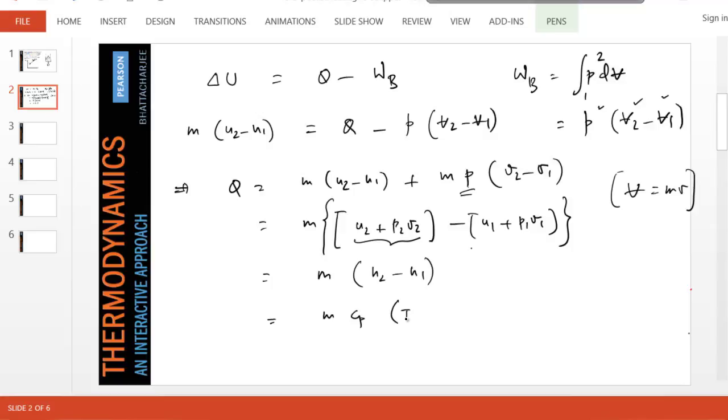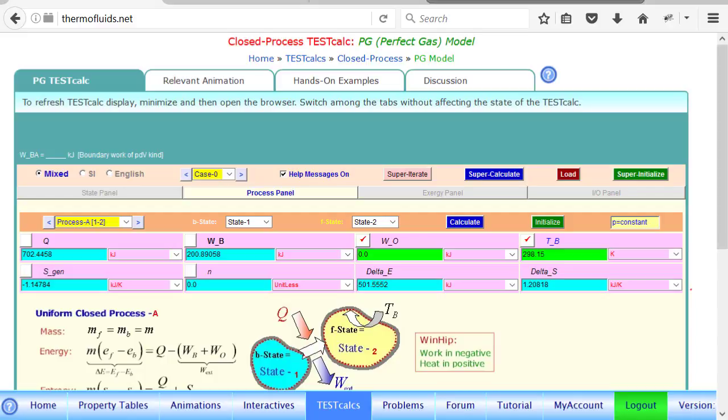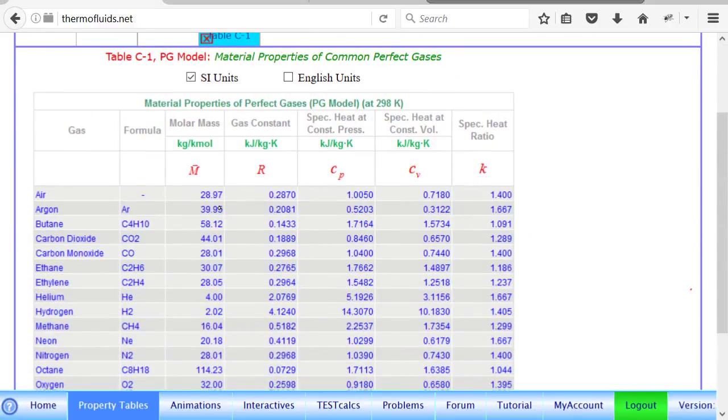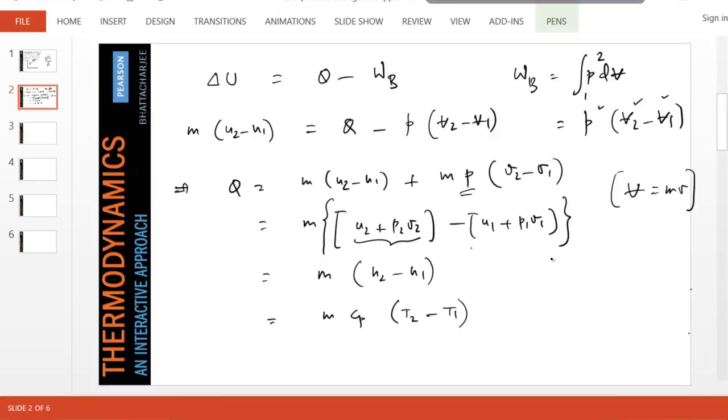If we go and pick up the value of C_P and C_V for air, we go to the property tables. For the PG model, for air you can see C_P is almost 1.005 and C_V is 0.718 in appropriate units. Mass is 1 kg, C_P is about 1, times 1000 minus 300, so the answer should be close to 700 kilojoules. We found Q.